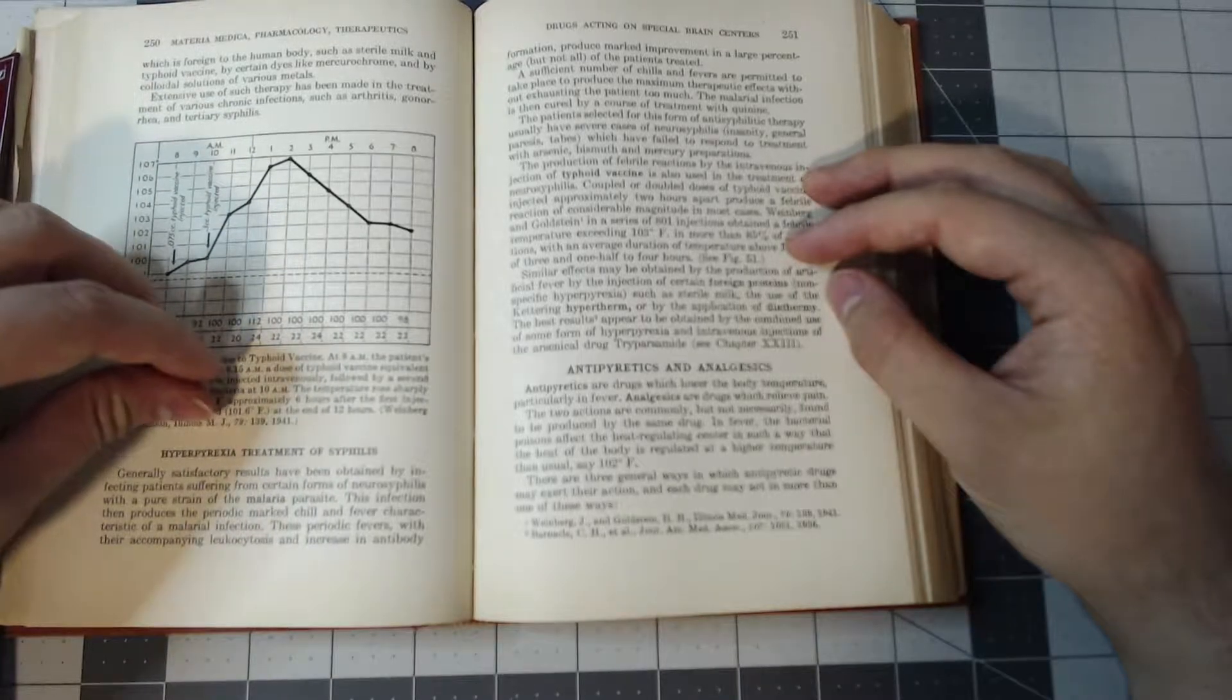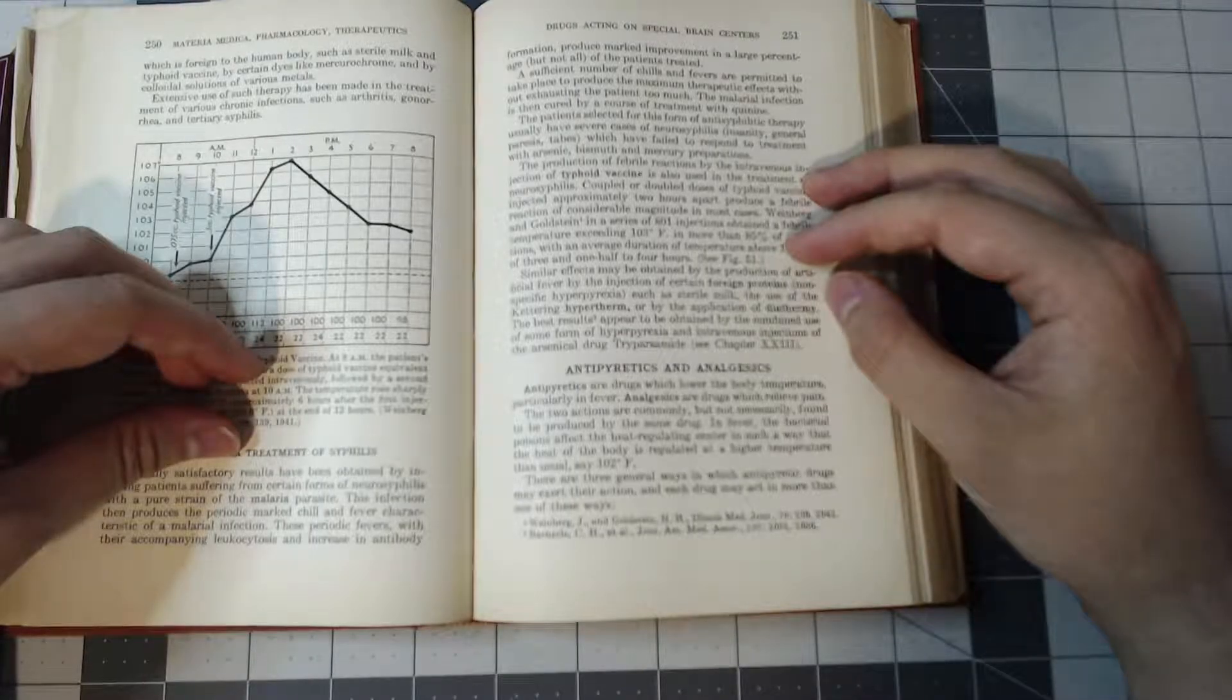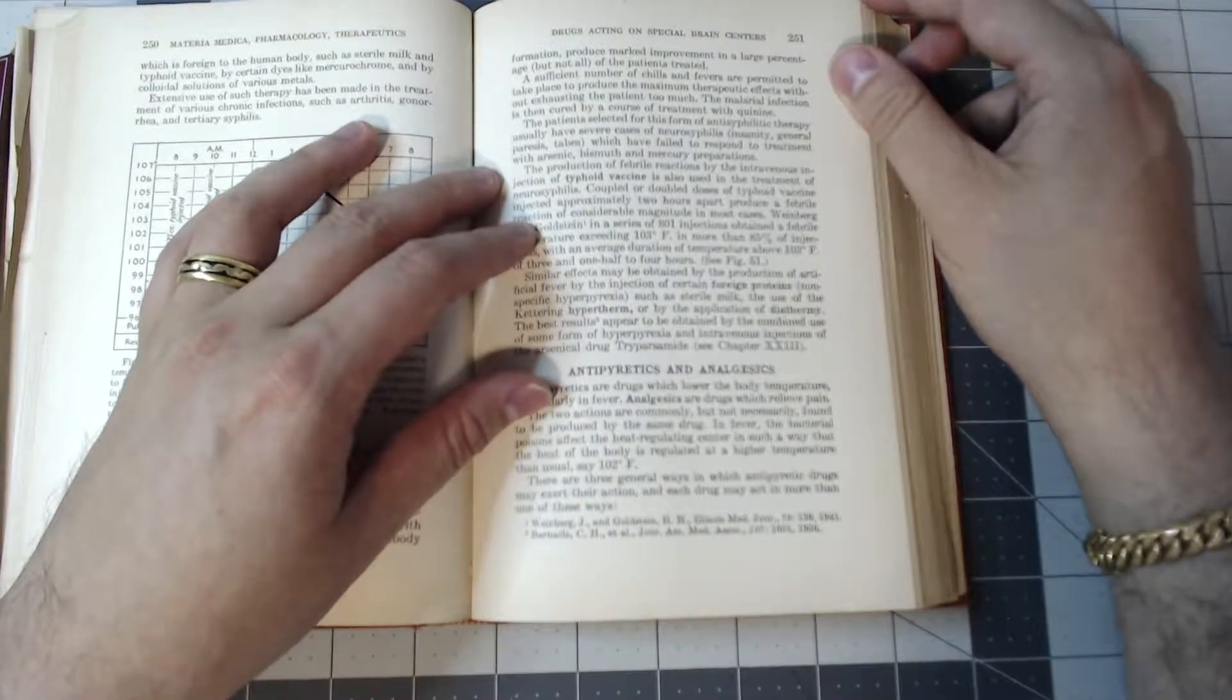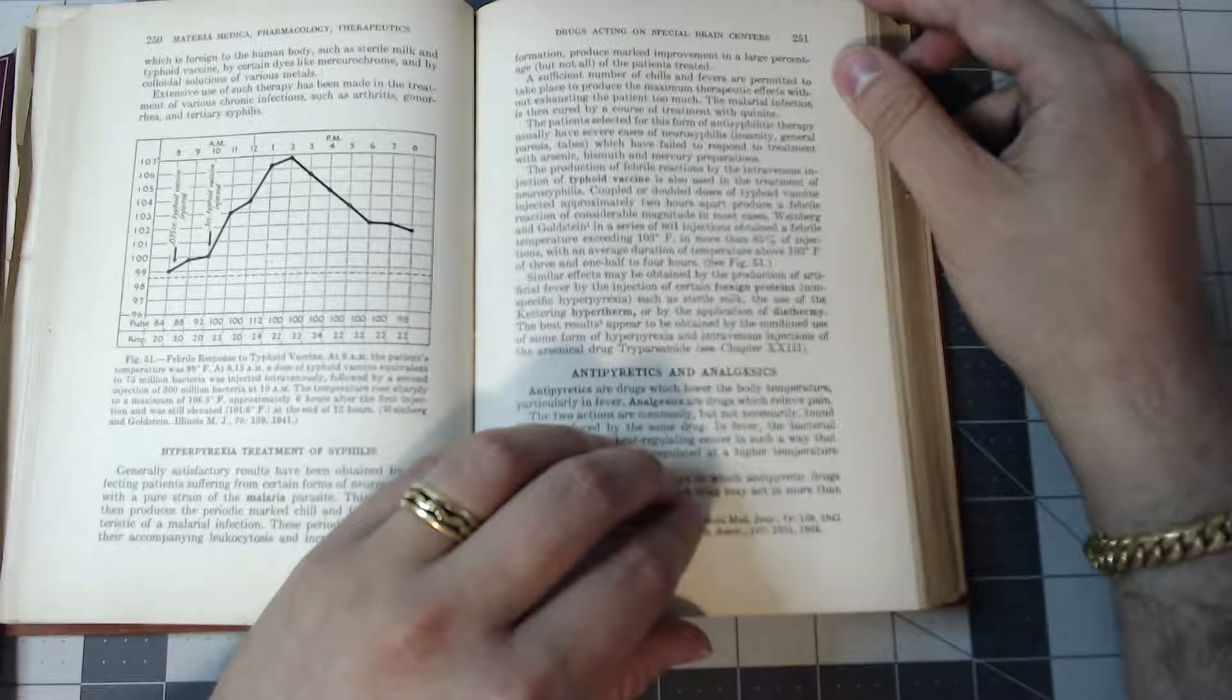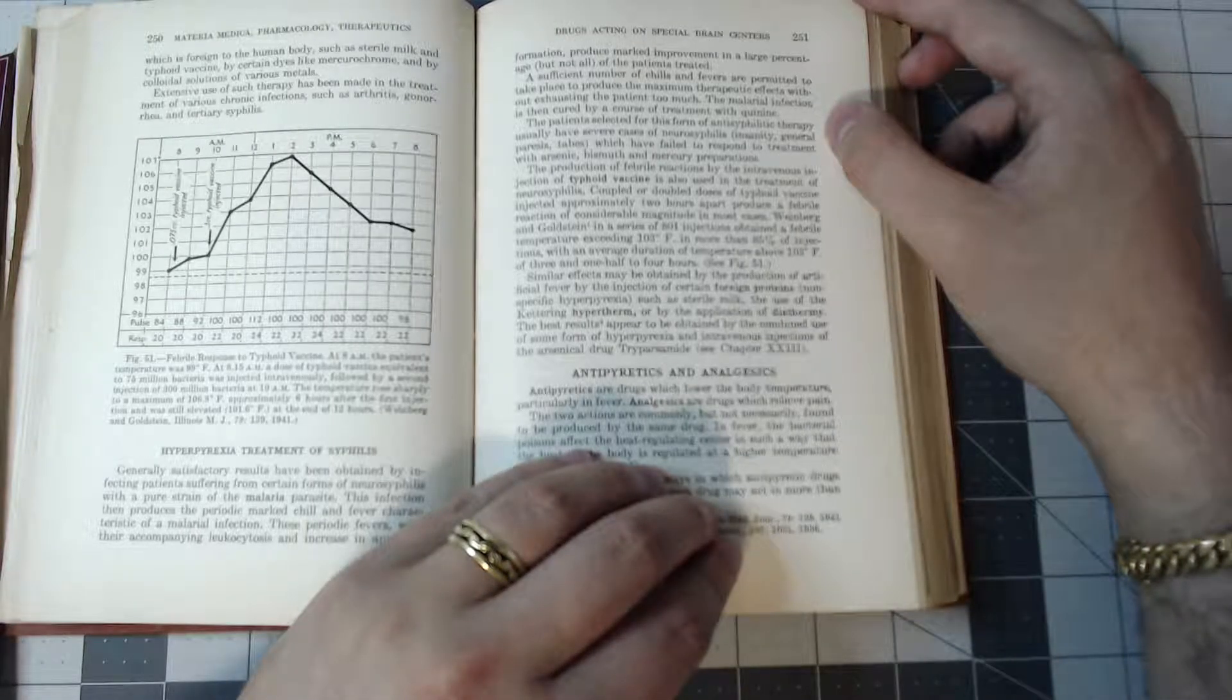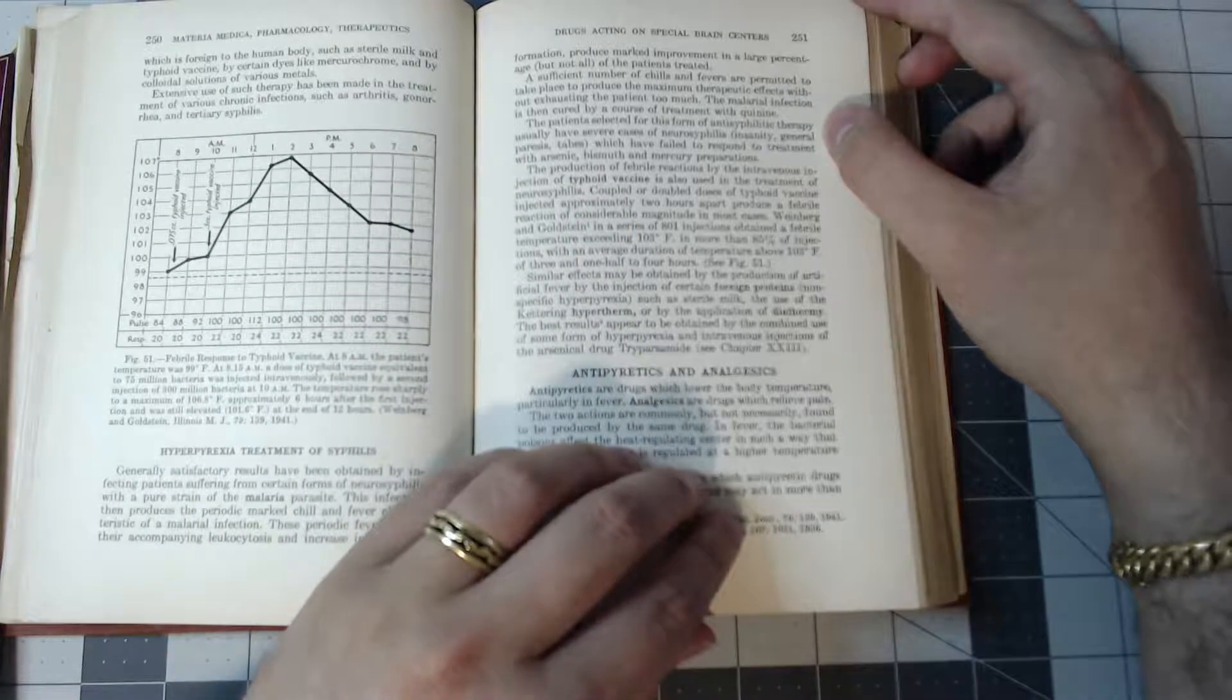Generally satisfactory results have been obtained by infecting patients suffering from certain forms of neurosyphilis with a pure strain of the malaria parasite. This infection produces a periodic marked chill and fever characteristic of a malaria infection. These periodic fevers, with their accompanying leukocytosis and increased antibody formation, produce marked improvement in a large percentage, but not all, of the patients treated. A sufficient number of chills and fevers are permitted to take place to produce a maximum therapeutic effect without exhausting the patient too much. The malarial infection is then cured by a course of treatment with quinine. The patient selected for this form of anti-syphilitic therapy usually has severe cases of neurosyphilis, insanity, general paresis, tabes, which has failed to respond to treatment with arsenic, bismuth, and mercury preparations.